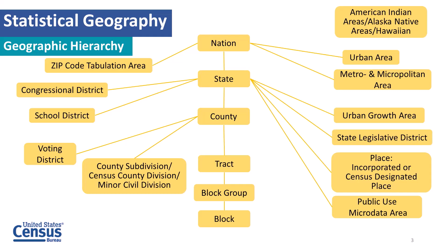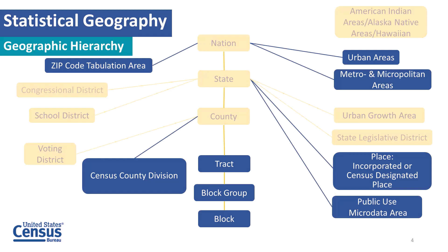This is what we call our hierarchy at the Census Bureau. We'll look at the ones bolded in dark blue. We're moving up the hierarchy today — starting at the bottom with block, blocks nest within block groups, and tracts nest within that. Notice that ZCTAs actually nest within the nation, so keep that in mind as we work through this hierarchy.